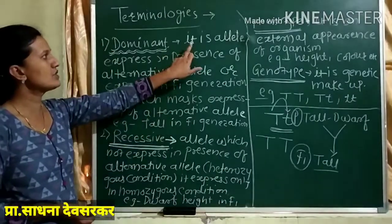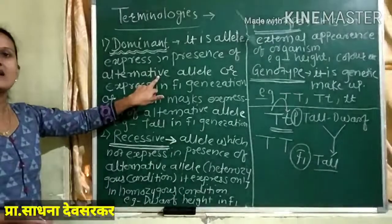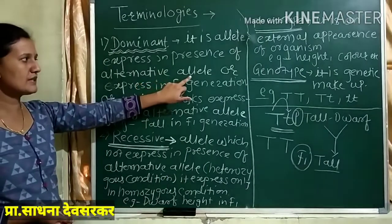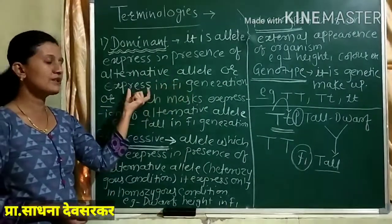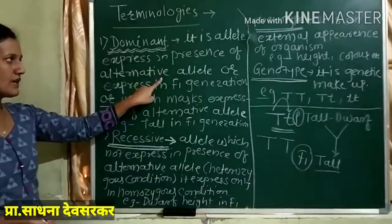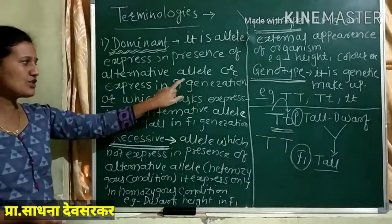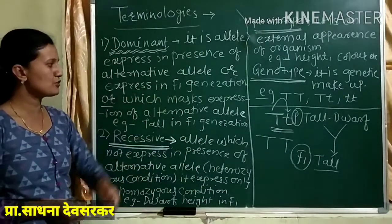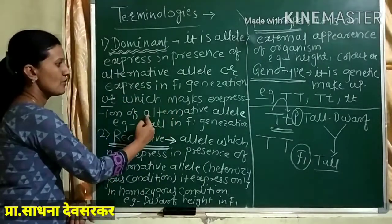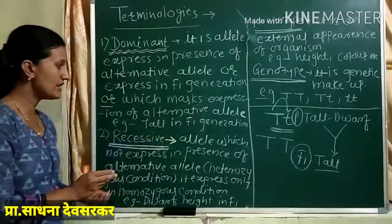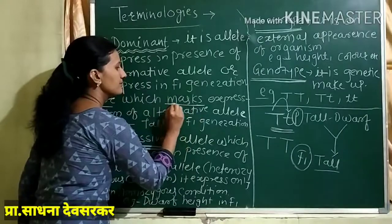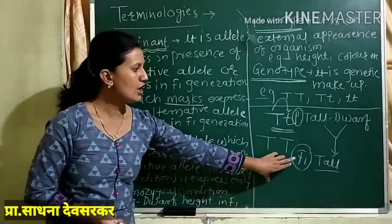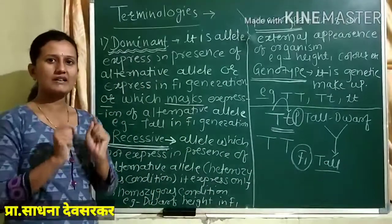Again, let us revise the definition. It is an allele which expresses in the presence of its alternative allele. Alternatively, it is the allele which masks the expression of the alternative allele. 'Mask' means to hide or cover. The tall character will hide the expression of the dwarf character in F1 generation.